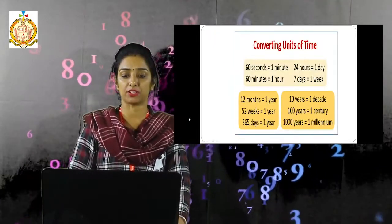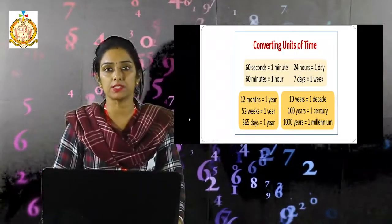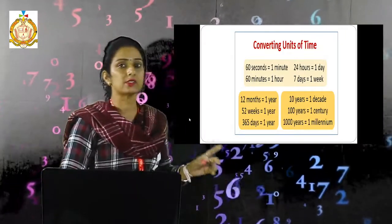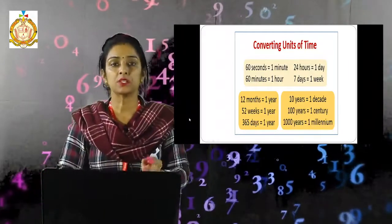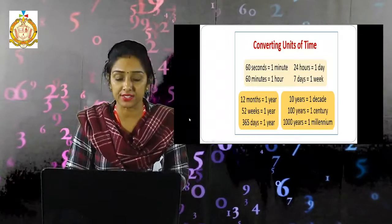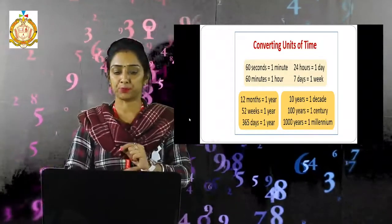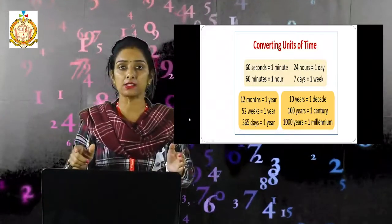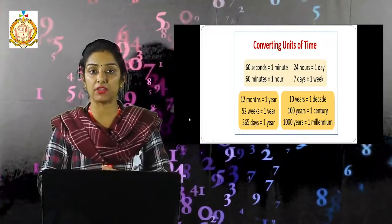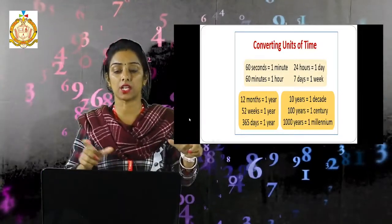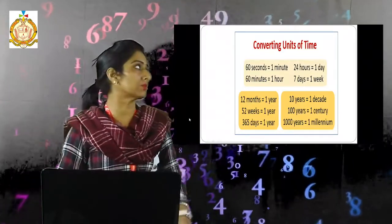Now convert units of time. 60 seconds equals 1 minute. 60 minutes equals 1 hour. 24 hours equals 1 day. 7 days equals 1 week. 52 weeks equals 1 year. 12 months equals 1 year. 365 days equals 1 year. 10 years equals 1 decade. 100 years equals 1 century. 1000 years equals 1 millennium.